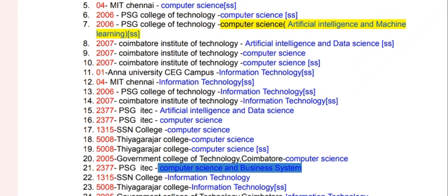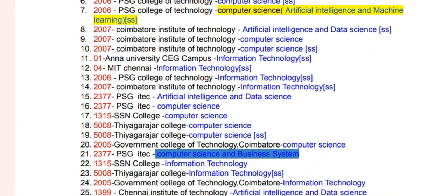Artificial intelligence and data science — you can use the 9th choice for computer science. That is the 10th choice. Why do you need three branches?